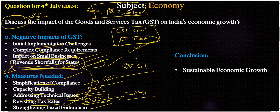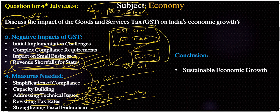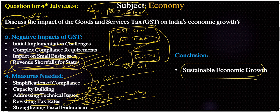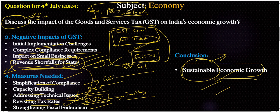We also have GSTN — the Goods and Services Tax Network — and all these important keywords should appear in our answer. In the conclusion, we need to connect our challenges and measures with the target of sustainable economic growth. As the system matures, it is expected to contribute to higher revenue collection, greater formalization of the economy, and enhanced global competitiveness — paving the way for sustainable economic growth. 'Sustainability' is a very important keyword to include in all answers.